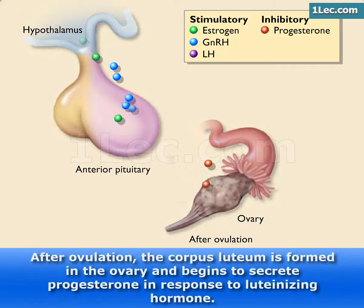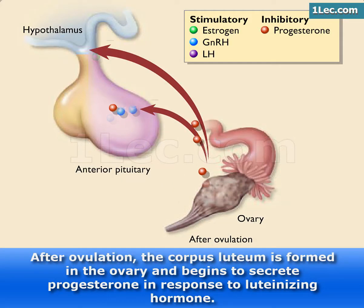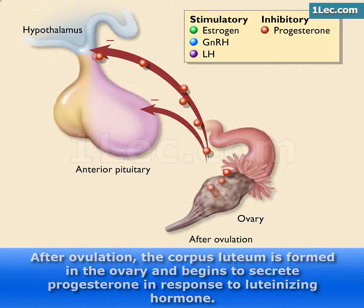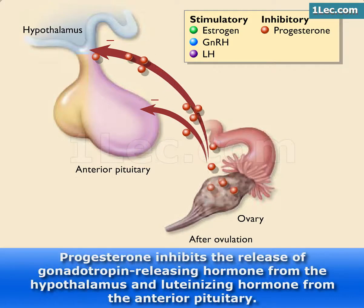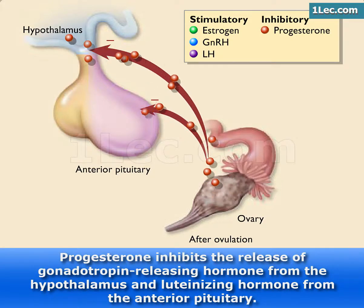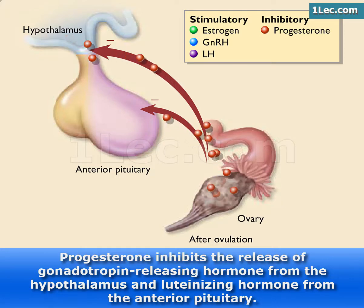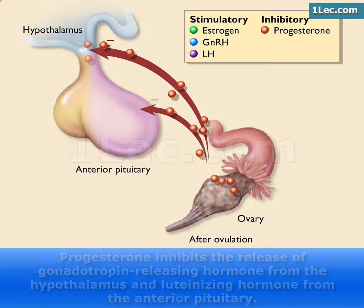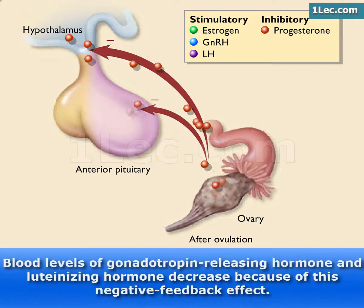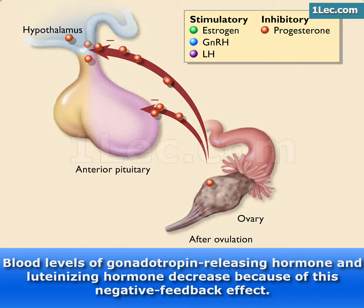After ovulation, the corpus luteum is formed in the ovary and begins to secrete progesterone in response to luteinizing hormone. Progesterone inhibits the release of gonadotropin-releasing hormone from the hypothalamus and luteinizing hormone from the anterior pituitary. Blood levels of gonadotropin-releasing hormone and luteinizing hormone decrease because of this negative feedback effect.